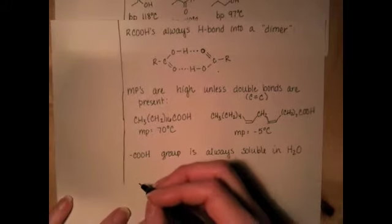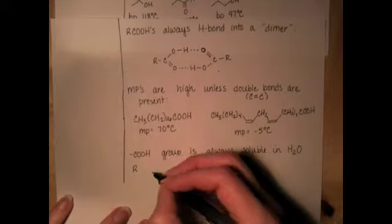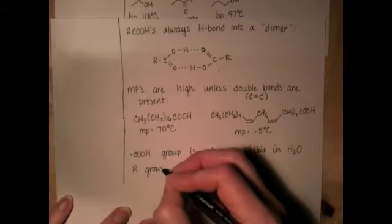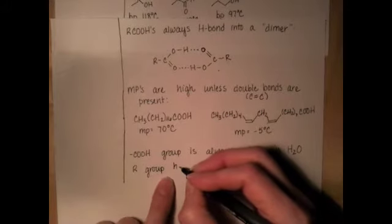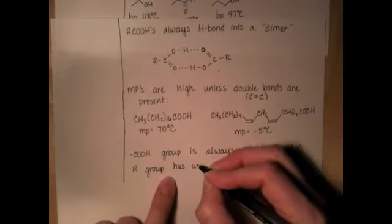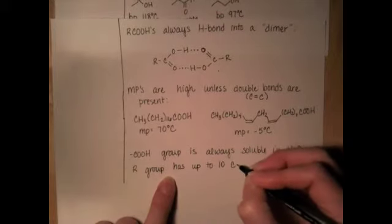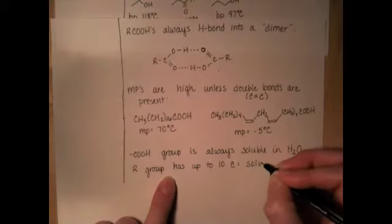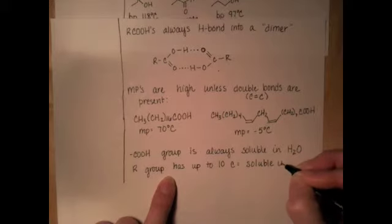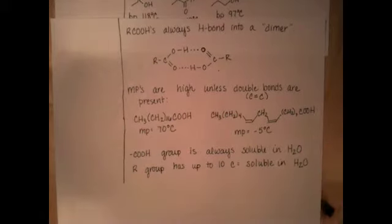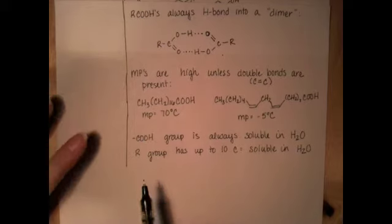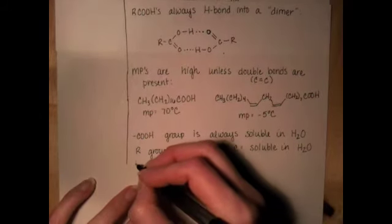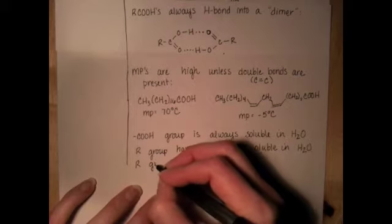The general rule of thumb for this - and I know I've mentioned this a couple times with other molecules as well - is if the alkyl group has up to 10 carbons, then it's going to be soluble in water. So the idea is that if there's only 10 carbons or fewer, it's a small alkyl group, it's not too greasy, and the high polarity of the carboxyl group is going to pull it into aqueous solution.